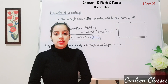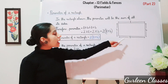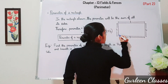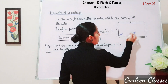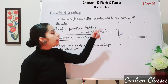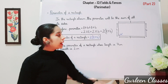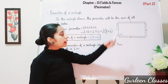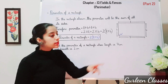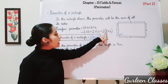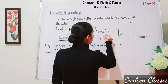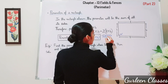Next, perimeter of a rectangle. The major property of a rectangle is that opposite sides are equal and all angles are 90 degrees. The perimeter will be the sum of all its sides: L plus B plus L plus B. L appears two times and B appears two times, so we write 2L plus 2B. Since 2 is common, the formula is: perimeter of a rectangle equals 2 into (L plus B).